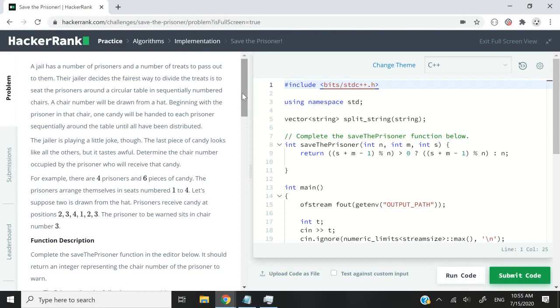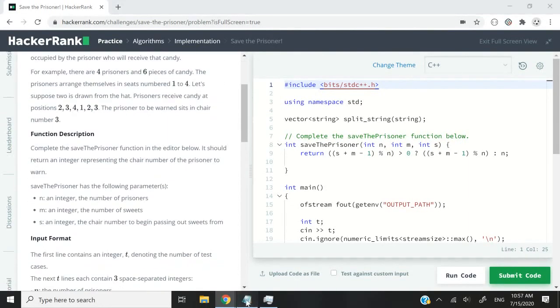Basically we're going to have some prisoners sitting on chairs and the chairs are going to have numbers from one all the way to number n. The chairs are in sequence, so chair number one, then two, three, and so on. There are going to be some pieces of candy distributed among the prisoners, and we want to find out who gets the last piece of candy.